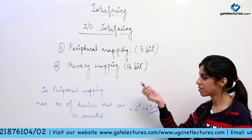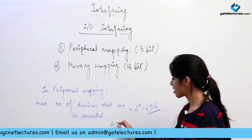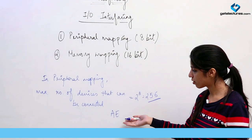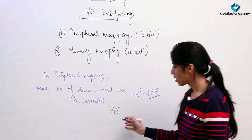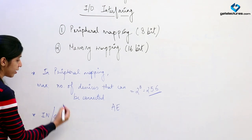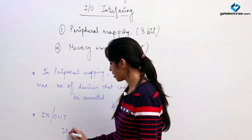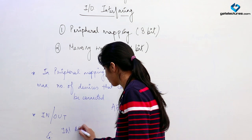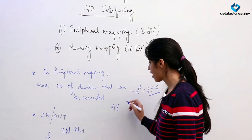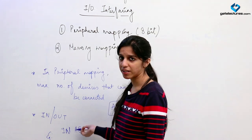In peripheral mapping, each device is going to have an 8-bit long address. Suppose you have connected a keyboard and the address for the keyboard is AE. If you input AE at the accumulator and use instructions like IN and OUT, you can input the data from the keyboard. We are using the instructions IN and OUT in IO mapping.